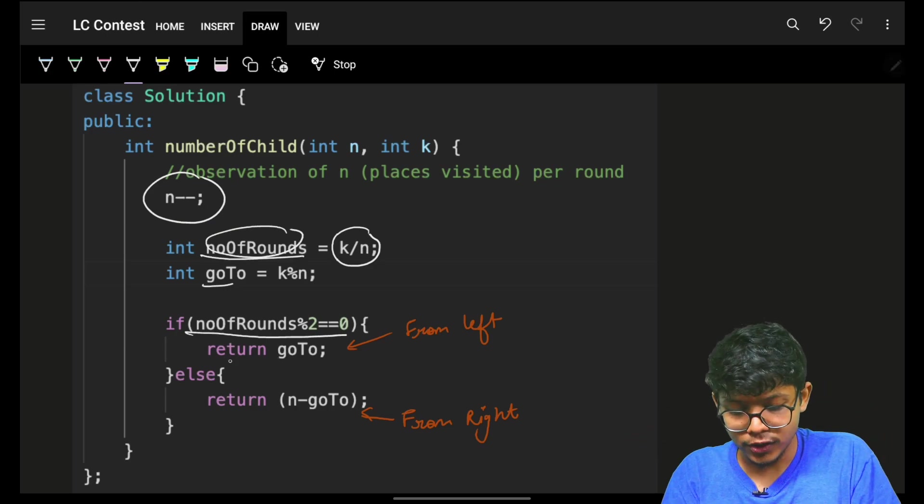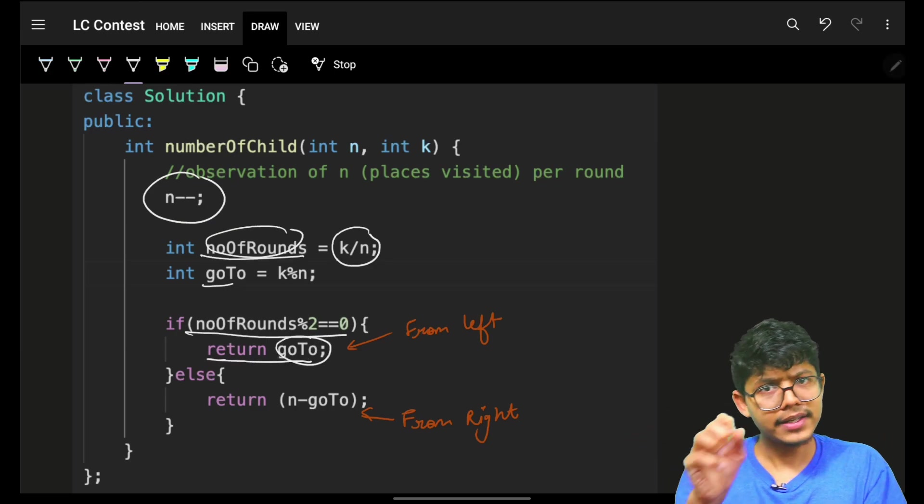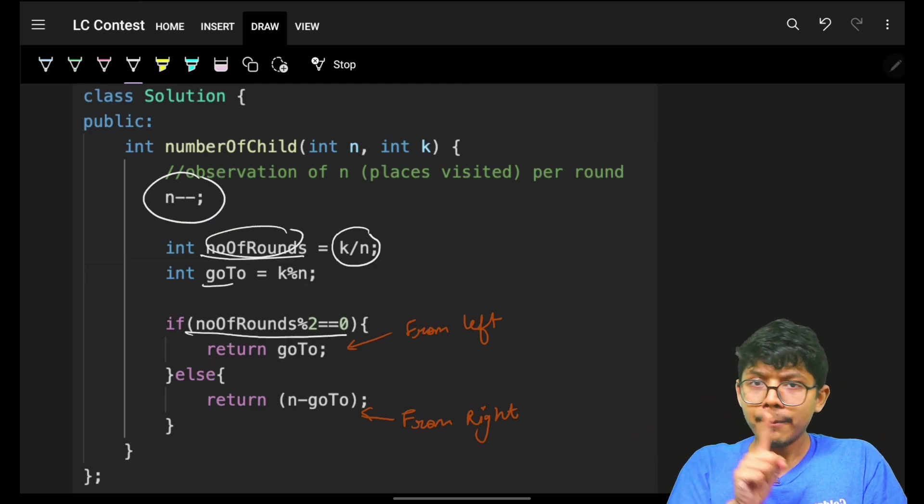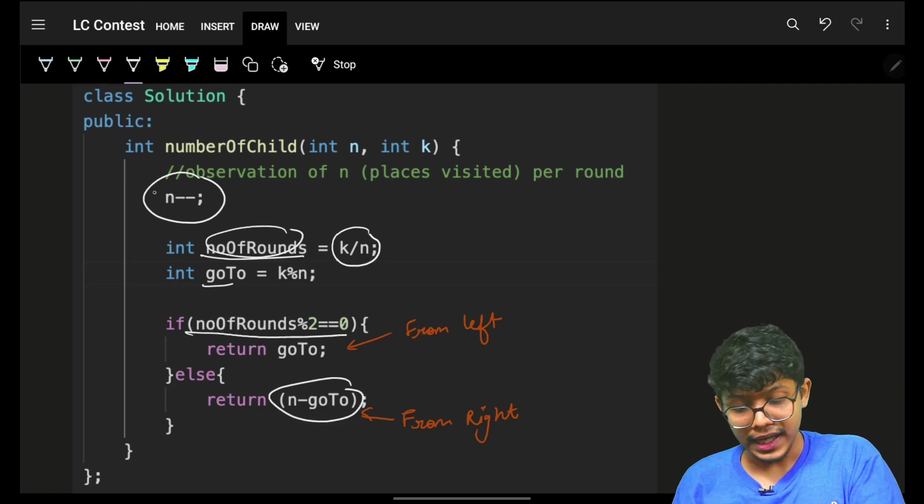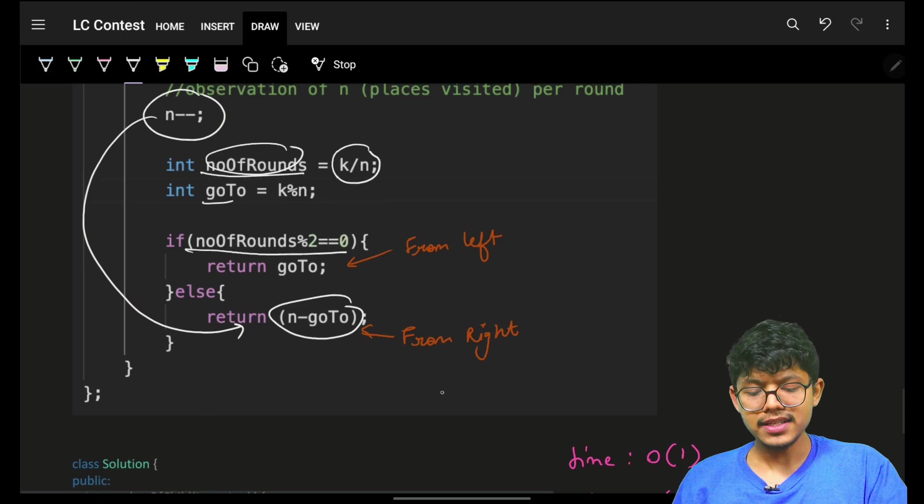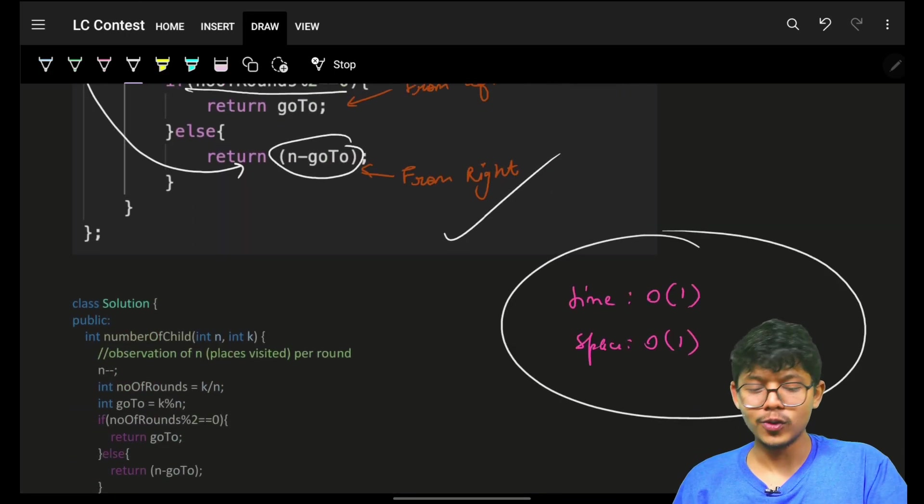So, I will go from the left. And we will go directly on that s, value s. But, otherwise, it is from the right. Then, go to n minus s. Make sure, n is already decreased. So, it is a correct value. And thus, this is your answer in O of 1 time and O of 1 space. And that's the maths approach.